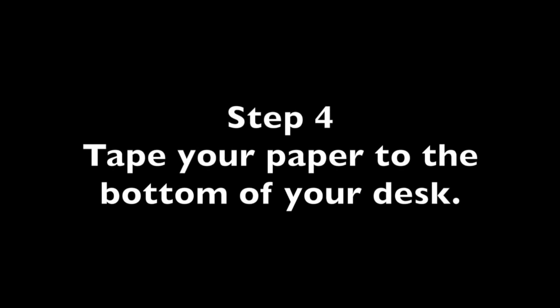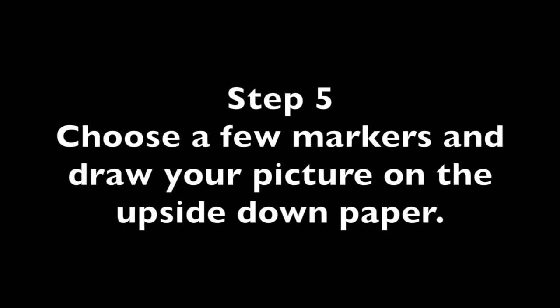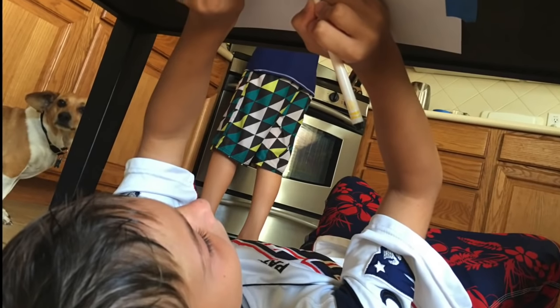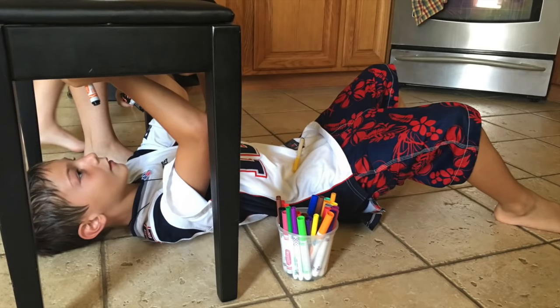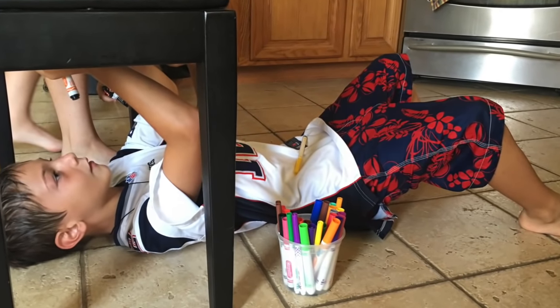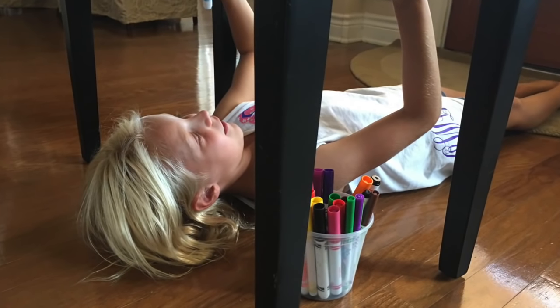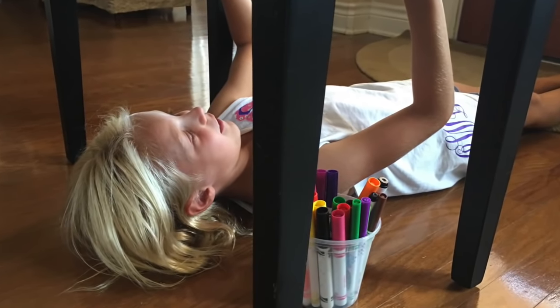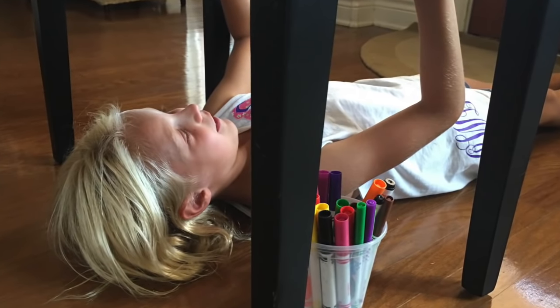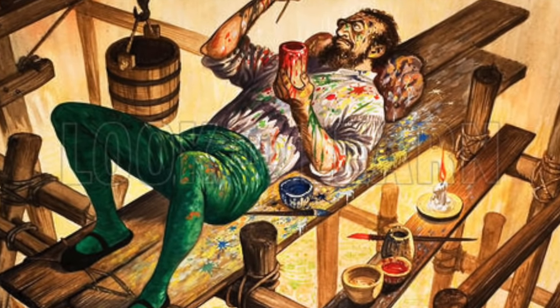Step 4: Tape your paper to the bottom of your desk. If you do not have access to a short table or desk, or if you are wearing clothing that is difficult to lie down in, you can choose to tape your paper up high on a cabinet or wall so you can still experience what it is like to draw on a ceiling-like surface. Step 5: Choose a few markers and draw your picture on the paper while lying upside down. Remember, this project is not about creating a super detailed or perfect work of art. Rather, this project allows you to experience what it must have been like to be Michelangelo and figure out how to create art on an upside down canvas.